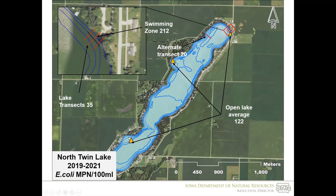Looking at the data collected for North Twin Lake in north central Iowa, we saw a swimming zone average over all of our sampling of about 212 MPN. Moving out into the zone adjacent to the swimming area, we found a significant drop-off down to just 35. At the alternate transect — the shoreline without a beach — we averaged only 20 MPN. With our detection limit being 10 MPN, we were really not far above minimum detection limits on average along a shoreline that didn't contain the swimming beach. Our open lake averages throughout the whole season depicted here were 122 MPN.